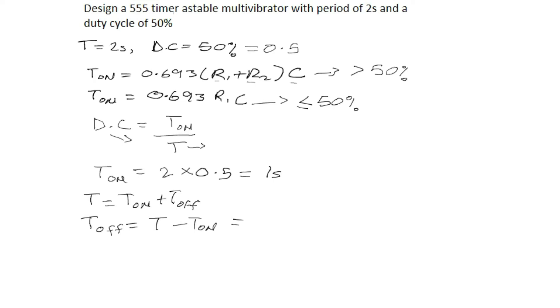So that means our time off will be given as T, that is our period, minus our T_on. Our T is 2 seconds minus 1, which we calculated our T_on to be. This will give us 1. Of course, after all, it's 50-50 from the 50%. So we have 1 second to be the on time and then 1 second as the off time.